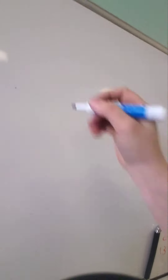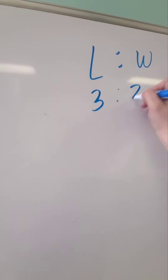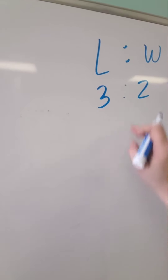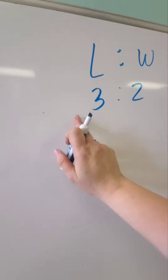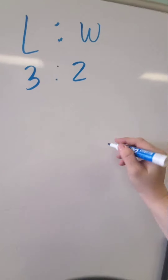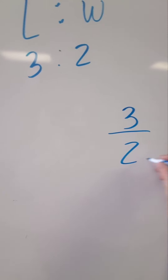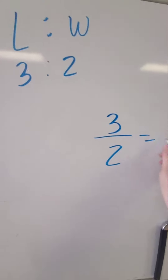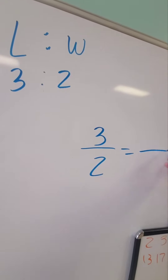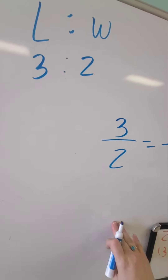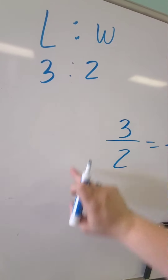There was another one that said the ratio of length to width is 3 to 2. So length to width is 3 to 2 — that means the length is 3 and the width is 2. Whichever one's first, that's the one that's going to be first. So if it's 3 to 2, and it says the width is 10, what is the length if they're both proportional?